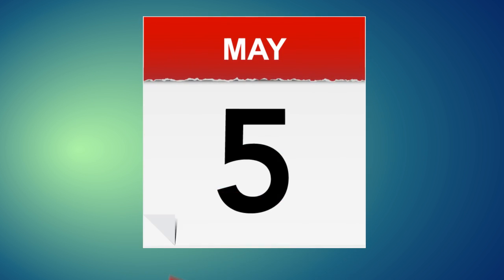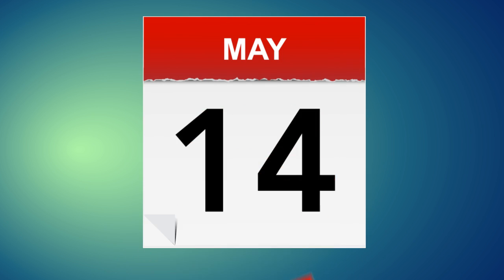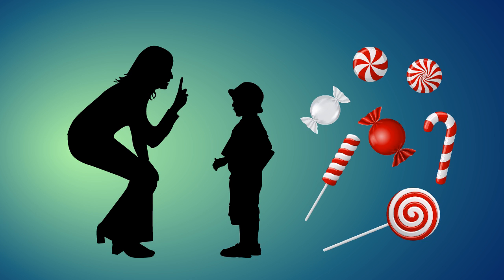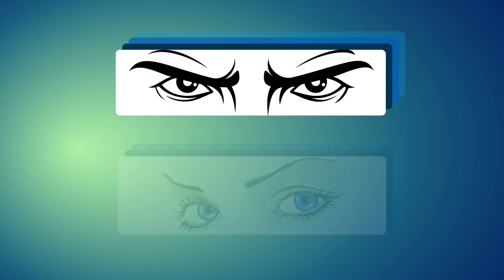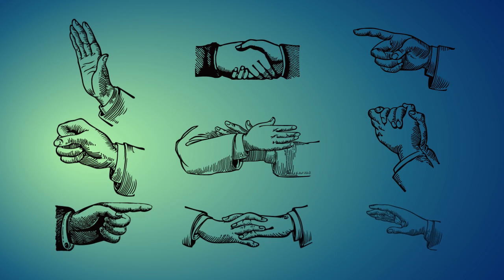Every day, we persuade others and they persuade us, many times and in many different ways. When a boy asks his mum for candy, he can do this by showing affection or by showing his temper. In a similar way, we can influence others either by casting a threatening look or through a friendly gaze. Our tone of voice and our body language are other elements which can be used for persuasion.